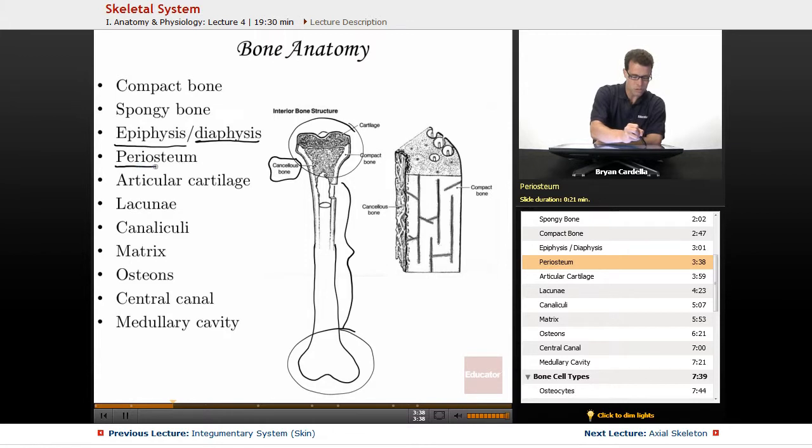The periosteum is a term for the outer layer of bone. And it's going to be most obvious in the section of the diaphysis. The outer layer that you're going to have ligaments being attached to, the part that you'd be holding if you actually had your hands around the diaphysis, you're touching the periosteum.